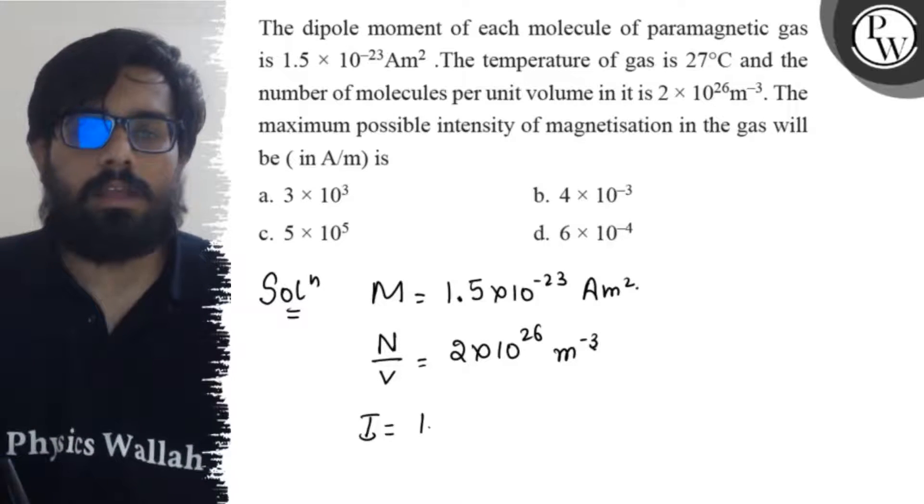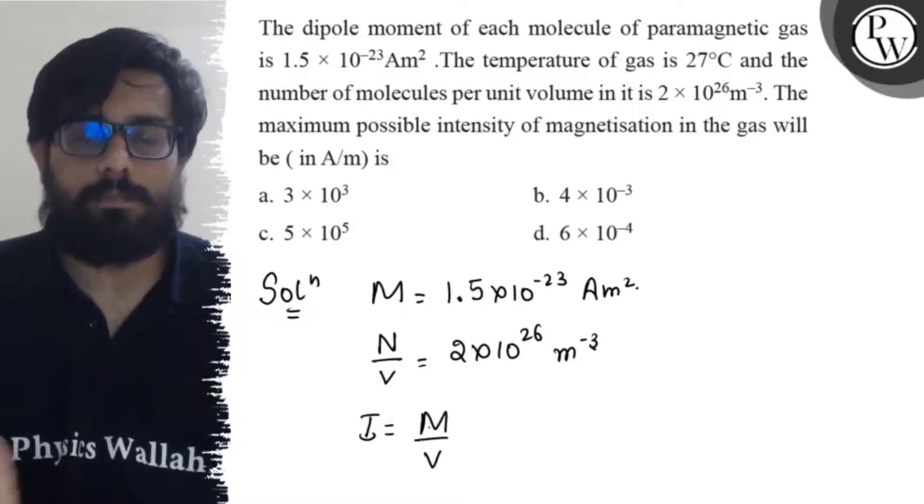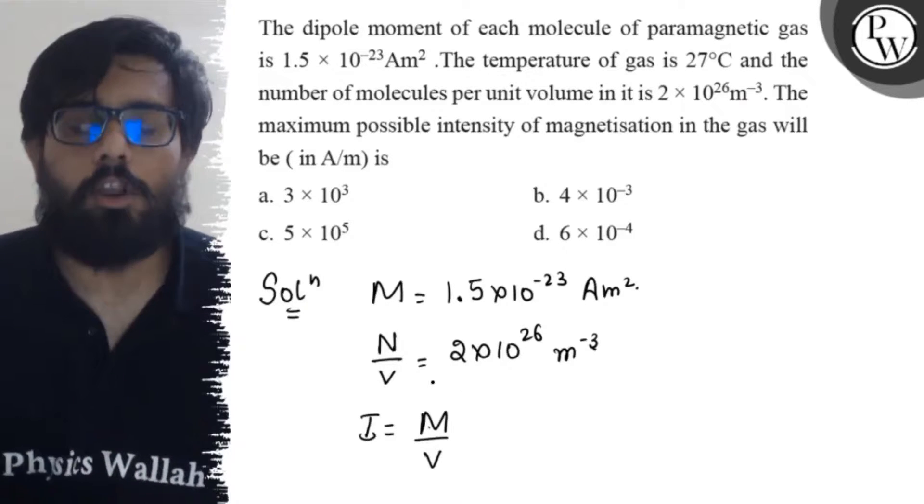Now we know the relation that I equals M/V, where M is the magnetic moment and V is the volume.